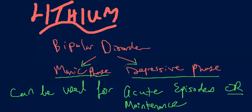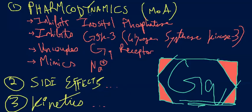Depressive just means the patient is very sad. Lithium can be used for acute episodes — when someone is actively having an episode — or for maintenance, prophylactically. Dr. Yoburn wanted us to cover three things: pharmacodynamics and mechanism of action, side effects, and kinetics.